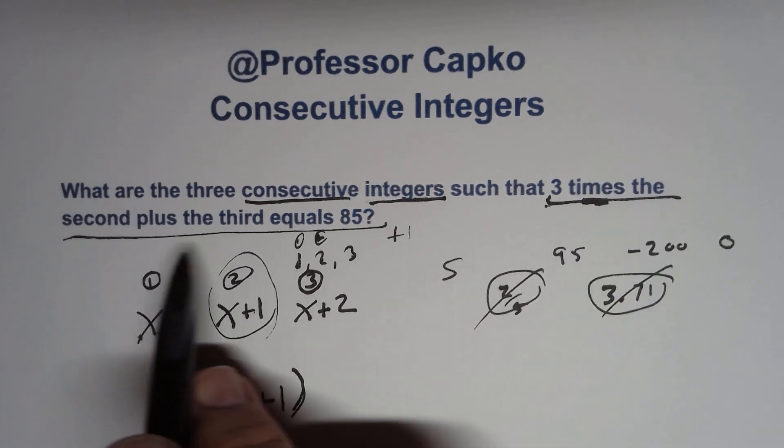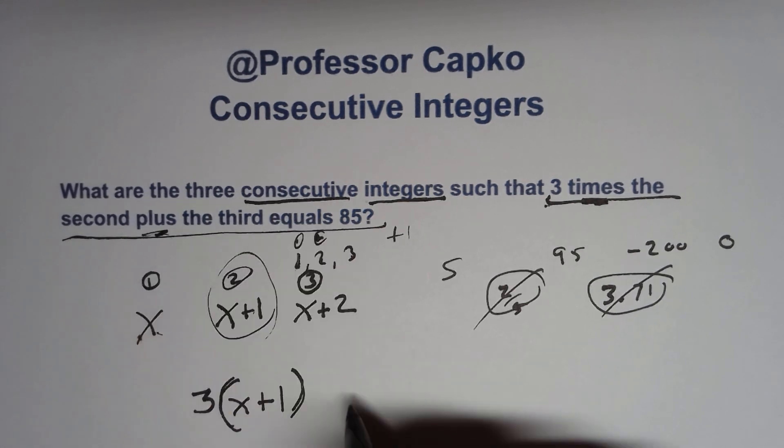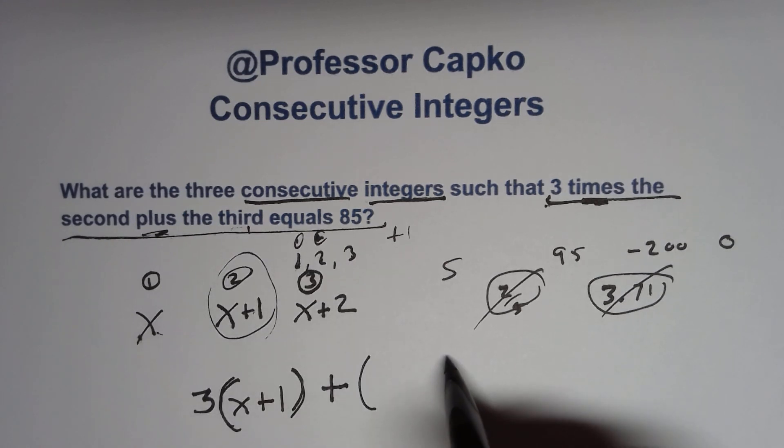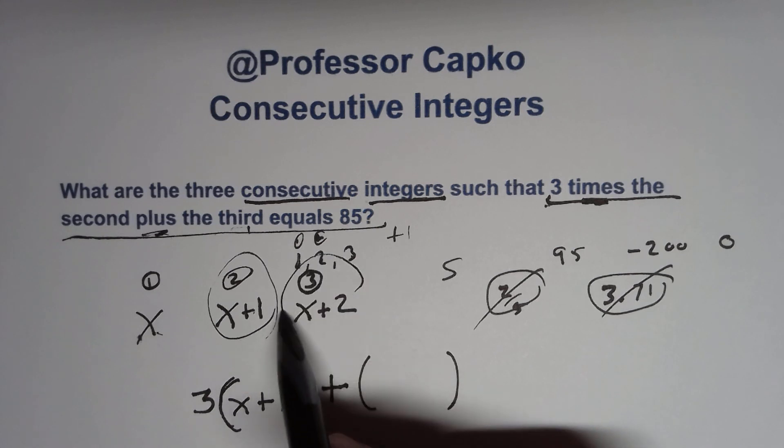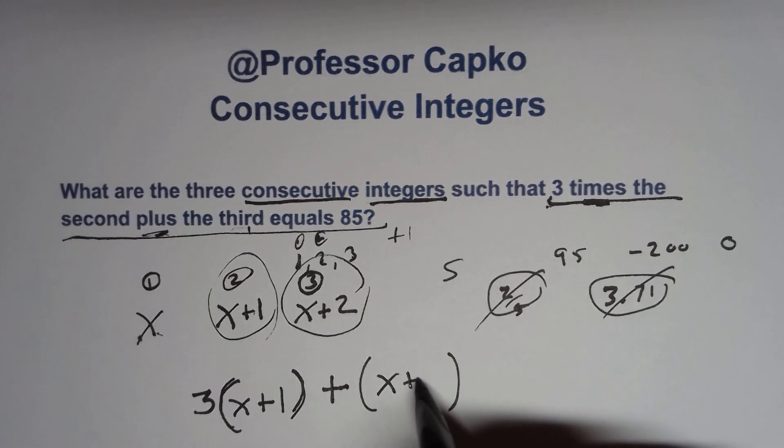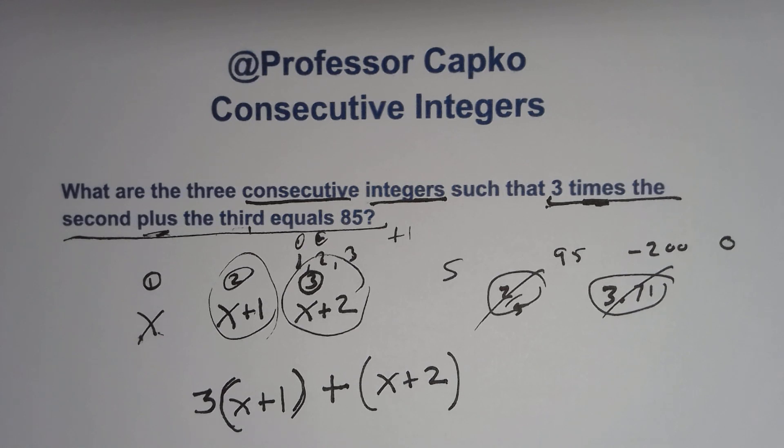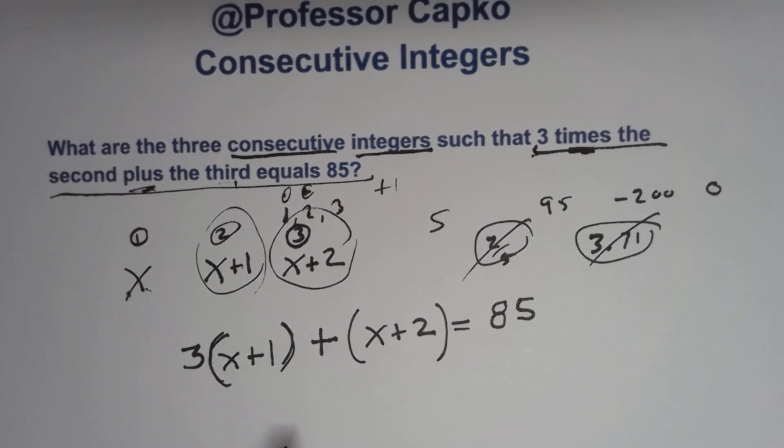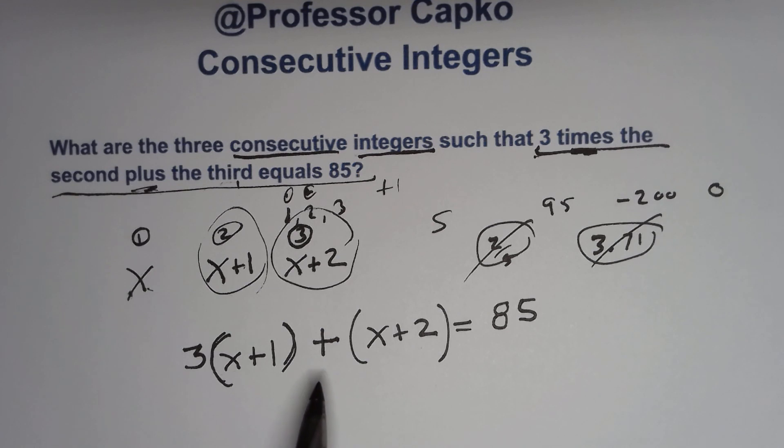And then, so that's the three times the second integer plus, so I'm going to put a plus here, the third. Well, what's the third integer? Well, I'm going to put some parentheses again so I can keep it together. Our third integer is this one here, X plus two. And we know that that equals 85. So far, so good. So we got three times the second integer plus the third integer is equal to 85. We've now created our single equation that's going to help us unlock the key. It's going to be the key to unlock what our integers are.